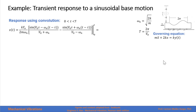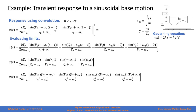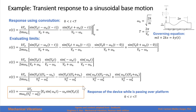Evaluating the limits of integration, we substitute all τ terms first at t and then at zero. This gives four terms which, after finding a common denominator and adding them together, yields the response for t greater than zero and less than the period.